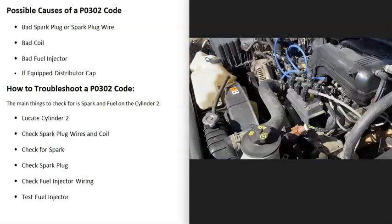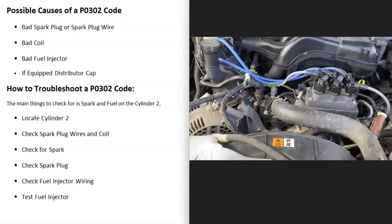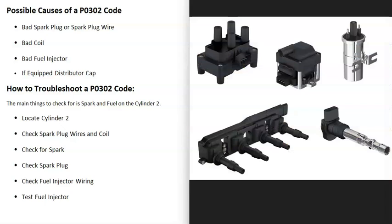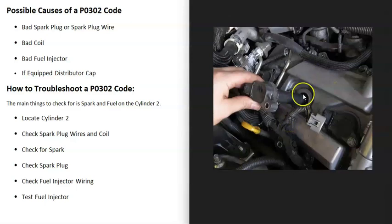How would you troubleshoot a P0302 code? First, locate cylinder number two and check all components related to spark—spark plug wire, spark plug, coil. There are different types of coils that engines can have depending on year, make, and model, but they all do the same thing: send out high voltage to the spark plug so it can spark when needed.